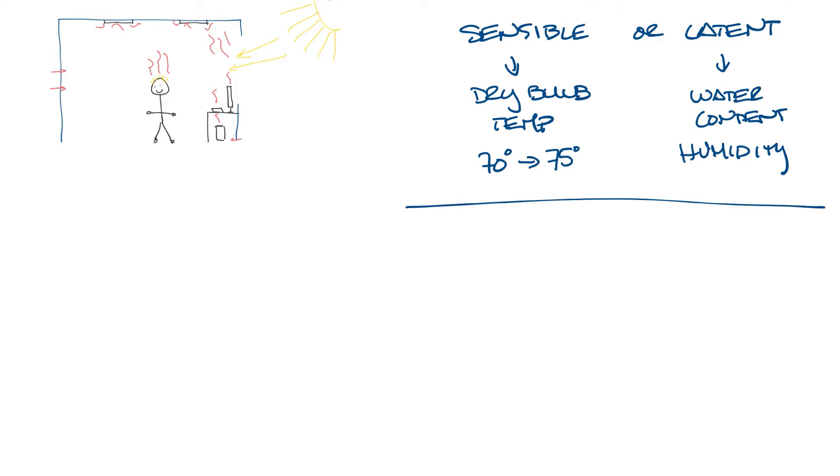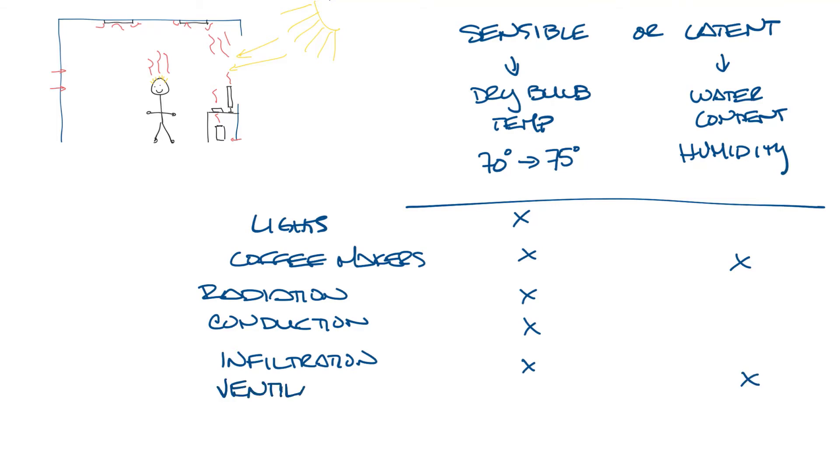So looking back at our little office above, we can see that lights don't raise the water content of the air, so they're just sensible loads. Some equipment, like coffee makers, will raise both the sensible and latent load. Radiation and conduction just raise the sensible load. Infiltration is air coming from outside, so that is both sensible and latent load. The ventilation air you bring in from outside is also both sensible and latent load. And your HVAC system equipment is just sensible load.